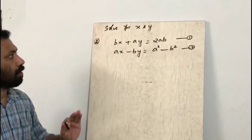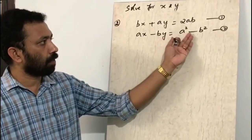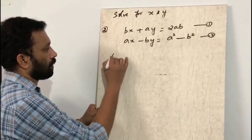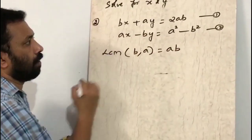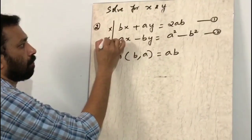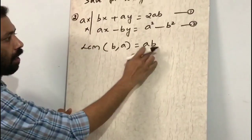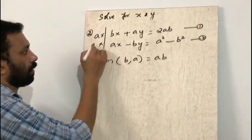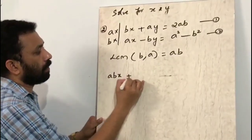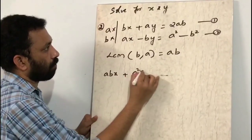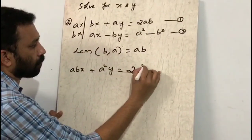Second question: bx + ay = 2ab and ax - by = a² - b². The LCM of b and a is ab. Multiply the first equation by a (ab ÷ b = a) and the second by b (ab ÷ a = b). Multiplying the first: abx + a²y = 2a²b. This is equation 3.